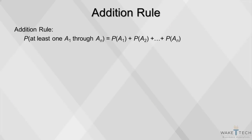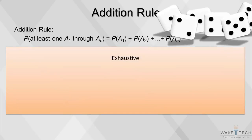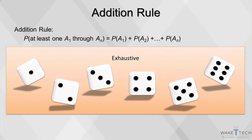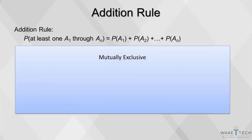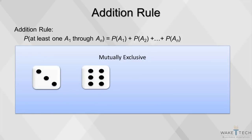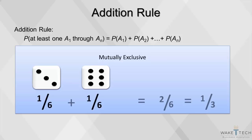The addition rule of probability involves the probability that at least one of the events will occur. Events are exhaustive if they exhaust all possibilities — one of the events must occur. For example, when we roll a 6-sided die, we will always end up with a number between 1 and 6. We say that events are mutually exclusive if at most one of them can occur. For example, you can't roll a 3 and a 6 on one die at the same time. If you have two mutually exclusive events, the probability of either one occurring is the sum of the two separate probabilities.